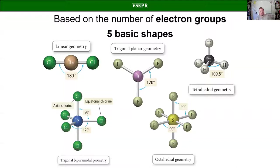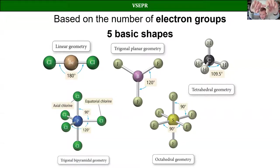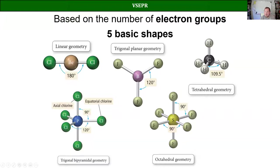A four-sided die is actually a tetrahedron. Think about this shape — a three-sided pyramid with three equal sides on top and one on the bottom. A tetrahedron is a four-sided object where all four sides are the same shape. That's what happens when you take four electron groups and attach them to the same central atom: you get a tetrahedral shape, because that's the way we maximize the distance between the bonds.